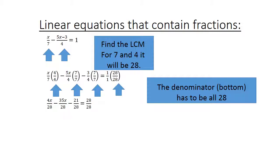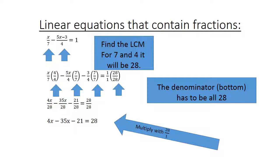We get 4x over 28 minus 35x over 28 minus 21 over 28 equals 28 over 28. Multiplying through by 28 gives 4x minus 35x minus 21 equals 28. Rearranging: 4x minus 35x equals 28 plus 21, so negative 31x equals 49, and x equals negative 49 over 31. Thank you.